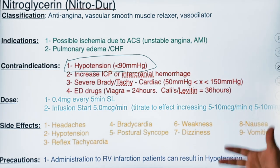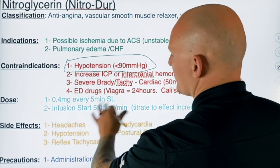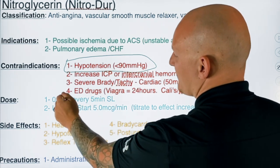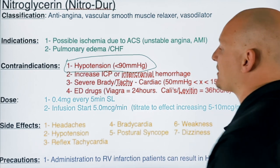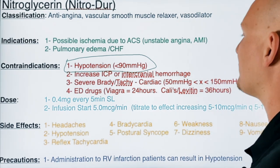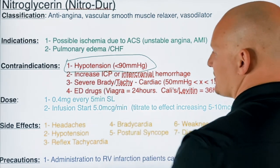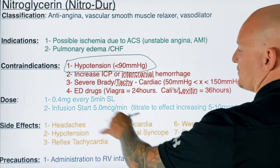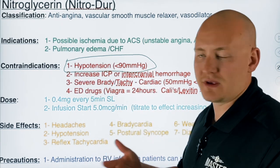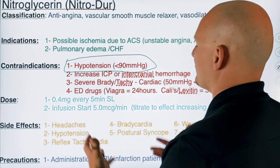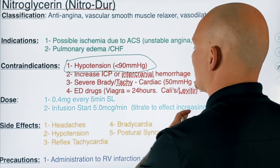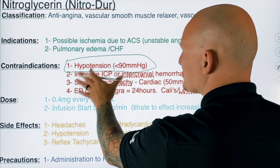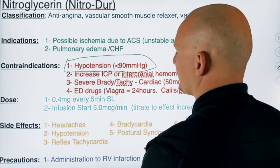There are two different types of doses. The first is the sublingual tablet or spray, which is 0.4 milligrams, given every five minutes as long as there are no other contraindications. The second option is the infusion, which is becoming more of the norm because it's so much easier to control, easier to titrate, and you're not nearly as at risk for the hypotension that can occur with nitroglycerin.